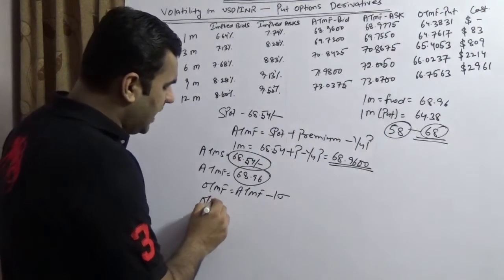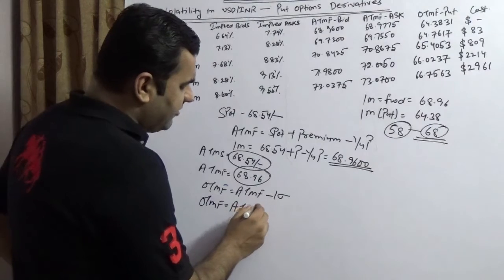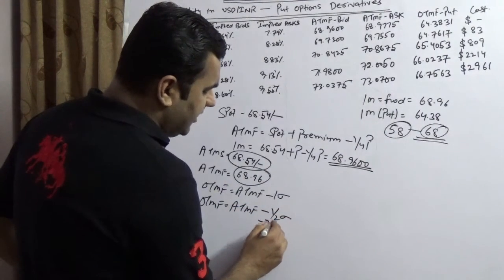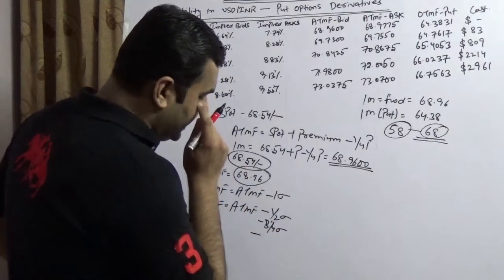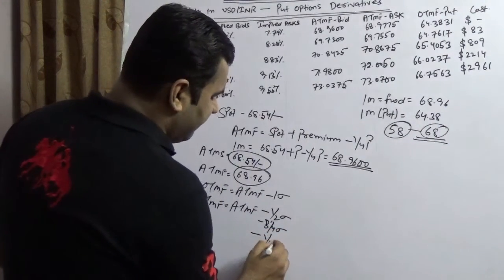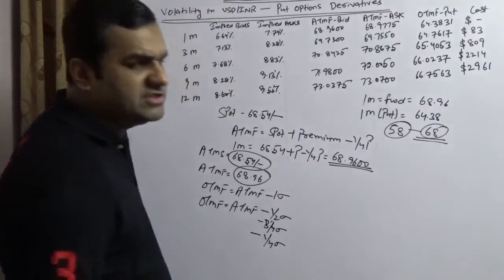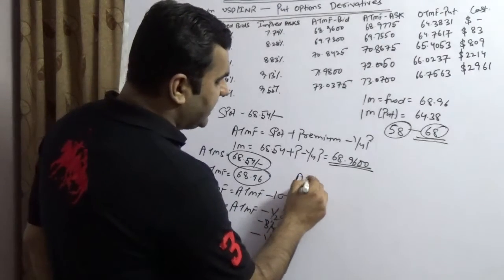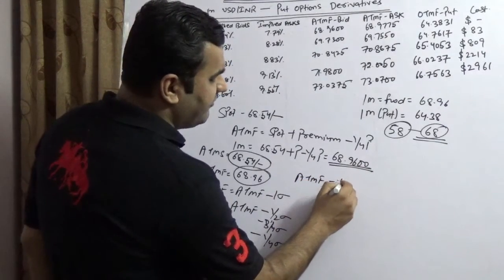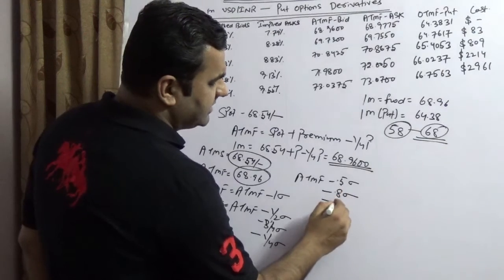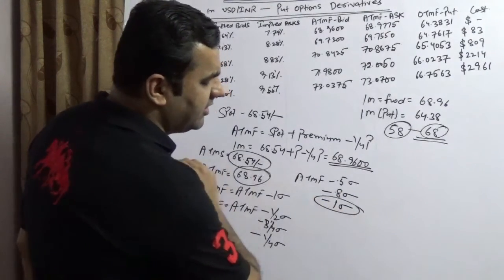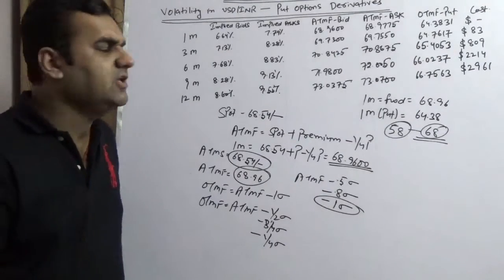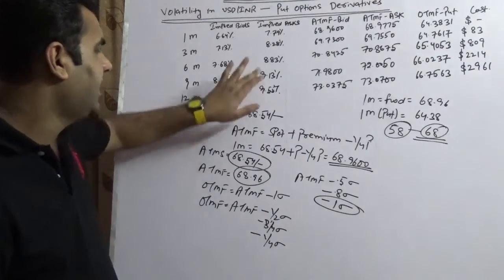You can have multiple ways. There are treasurers who are saying out of the money forward is nothing but at the money forward minus half implied volatility, you can take minus three upon four implied volatility, you can say minus one by four implied volatility, so this you can change. Generally what people are doing is at the money forward minus 0.5 volatility away, 0.8 volatility away, minus 1 volatility away. I am always using 1 volatility away, 1 volatility away means 1 implied volatility away.